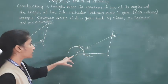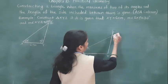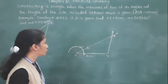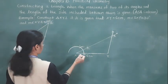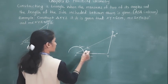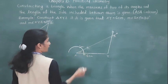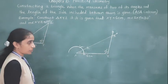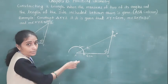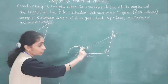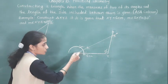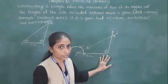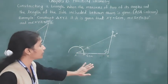So we got triangle XYZ. Angle X is 30 degrees, angle Y is 100 degrees, and side XY is 6 centimeters. This is the completed construction. Using ruler and compass we drew the 60 degree angle and bisected to get 30 degrees. For the 100 degree angle we used the protractor. So here we have constructed triangle XYZ.